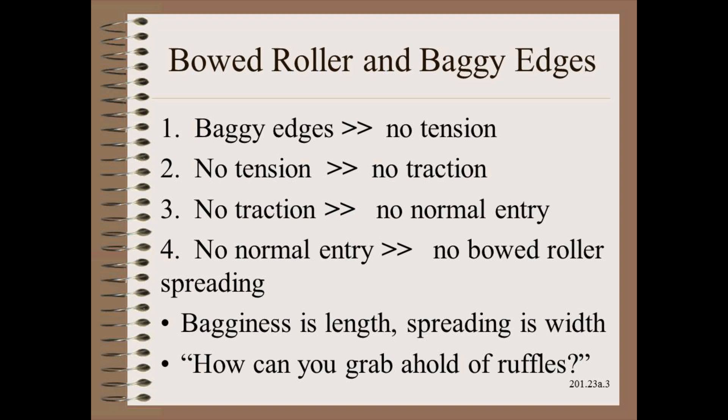Here we are going to offer alternative arguments based on the mechanics we learned in Web 101. 1. Baggy edges means no tension. 2. No tension means no traction. 3. No traction means no normal entry. 4. No normal entry means no bode roller spreading. Also, from the last slide, bagginess is excess length, but spreading deals with width.